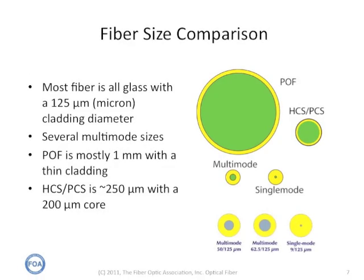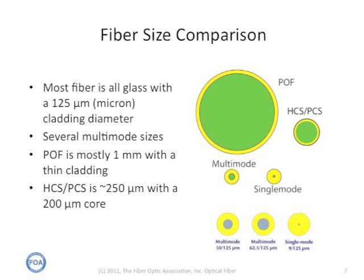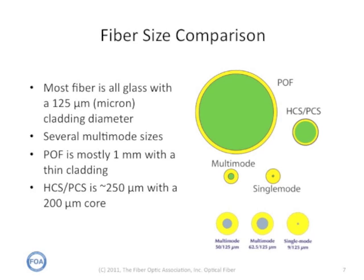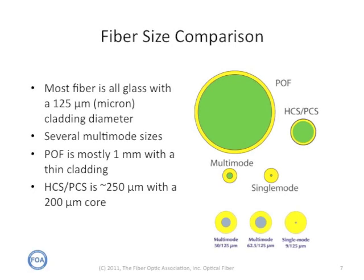There are different sizes of optical fiber, but the majority of all fiber is glass fiber with a 125 micron cladding diameter — that's about five one-thousandths of an inch. There are several different multi-mode sizes with different core diameters, 50 micron and 62.5 micron being the most popular, although in the past we've had 85 and 100 micron cores. Plastic optical fiber is a very large fiber, about a millimeter in diameter, with a very thin cladding. An HCS-PCS fiber has a glass core and a plastic cladding with a core of about 200 microns and a cladding of about 250.